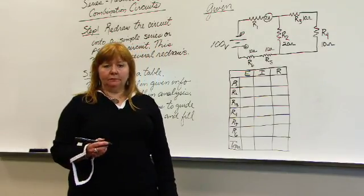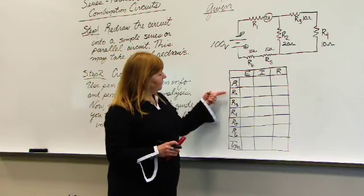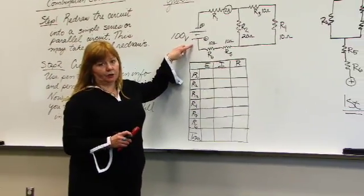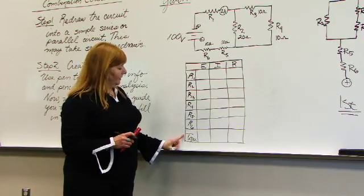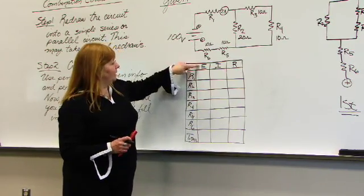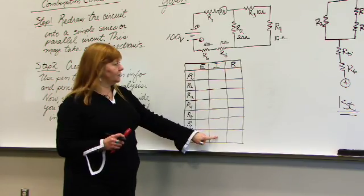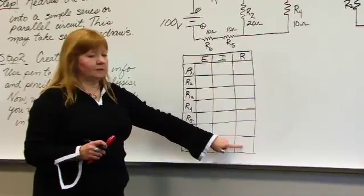I've created a table that allows us to track information over six resistors because we have six resistors in this circuit. I've got a place where I can keep track of the totals, meaning the total information regarding voltage, regarding current over each as well as total, and resistance.